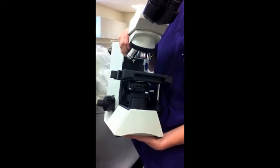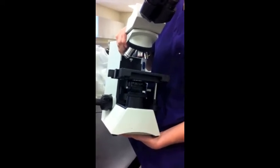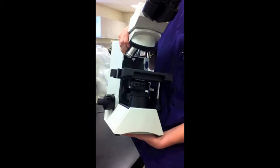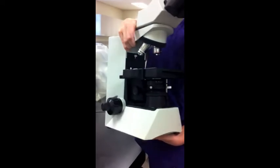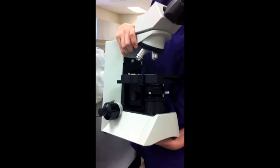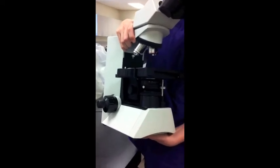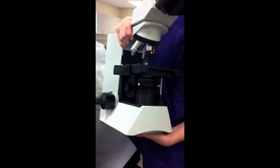The proper way to hold and transport a light microscope is to place your hand on the arm, which is the back, and support with another hand on the bottom, the base.